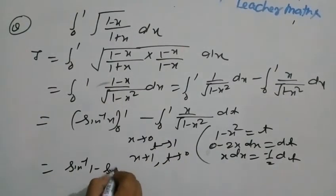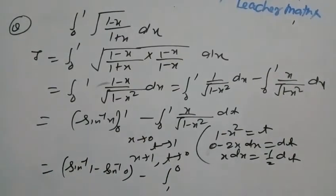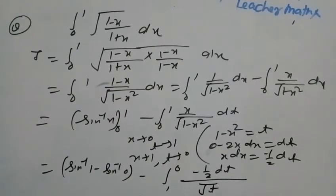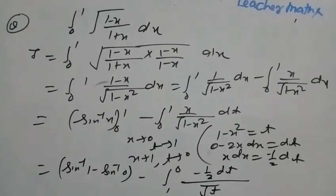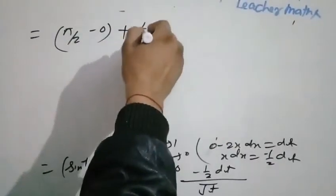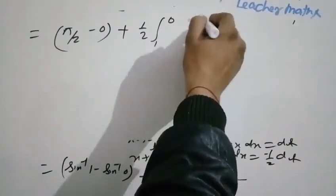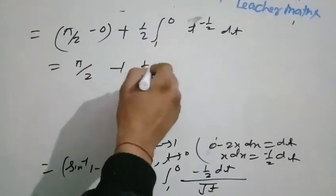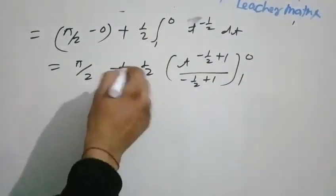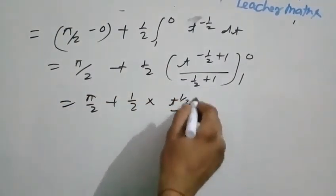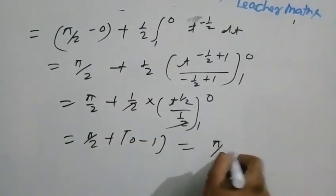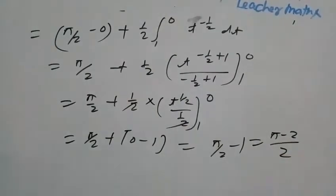We get sine inverse 1 minus sine inverse 0 minus the integral from 1 to 0 of (minus 1 by 2 dt) over root t. This becomes sine inverse 1 plus 1 by 2 times integral from 1 to 0 of t to the power minus 1 by 2 dt. Evaluating: pi by 2 plus 1 by 2 times [t to the power 1 by 2 over 1 by 2] from 1 to 0, giving upper limit minus lower limit as pi by 2 minus 1.